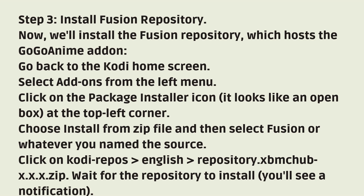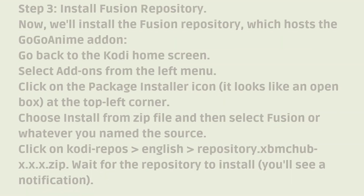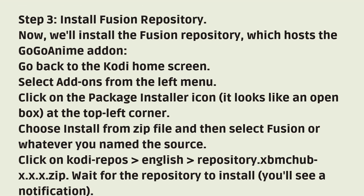Step 3: Install Fusion Repository. Now we'll install the Fusion Repository, which hosts the GoGoAnime Add-on. Go back to the Kodi home screen, select Add-ons from the left menu, and click on the Package Installer icon at the top left corner. Choose Install from Zip File, then select Fusion — or whatever you named the source. Click on Kodi Repos English Repository zip file and wait for the repository to install.